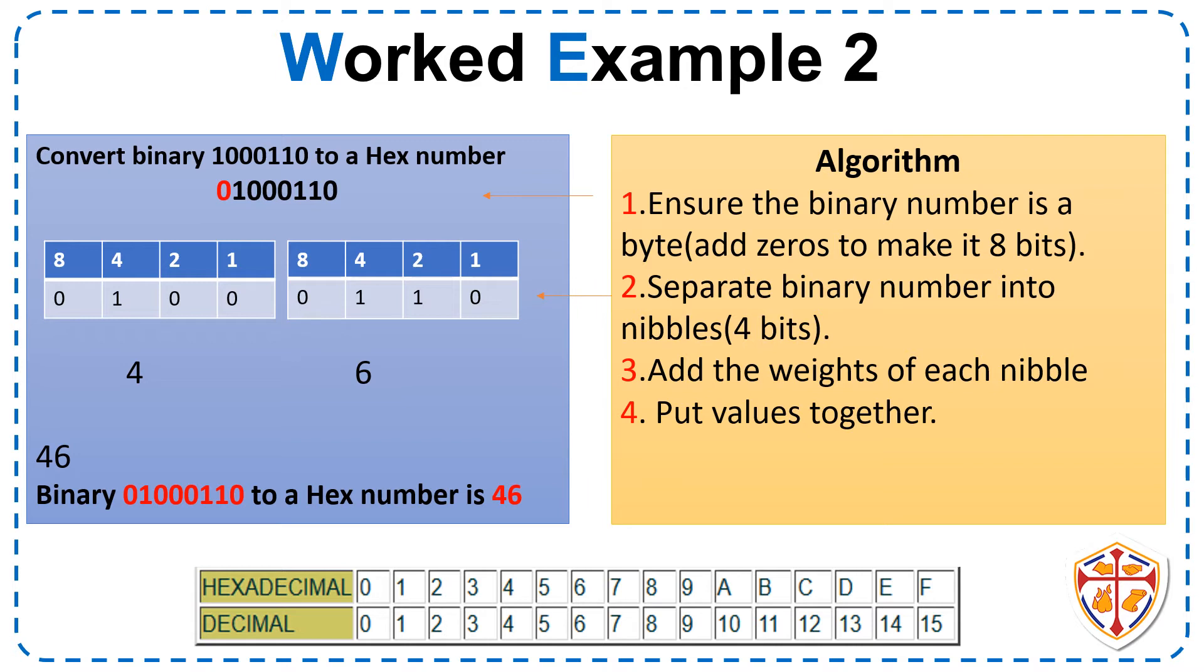Step 2. Separate binary number into nibbles, 4 bits. Step 3. Add the weights of each nibble. Nibble 1. We have 4. Nibble 2. 4 plus 2. We got 6.